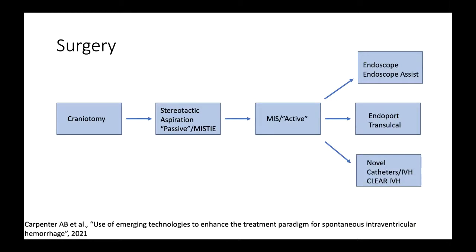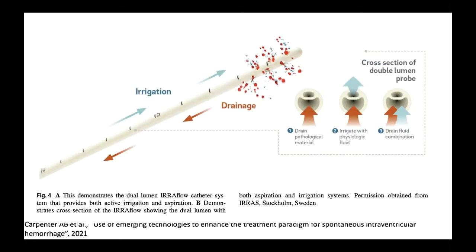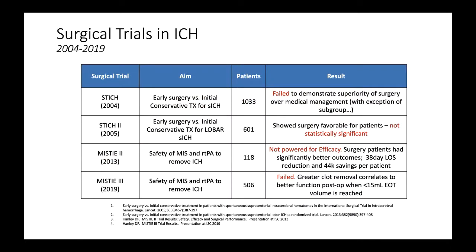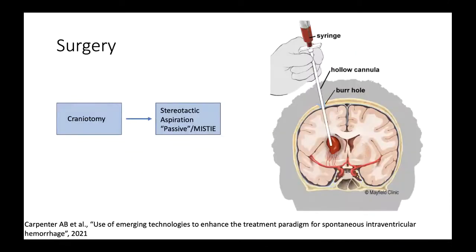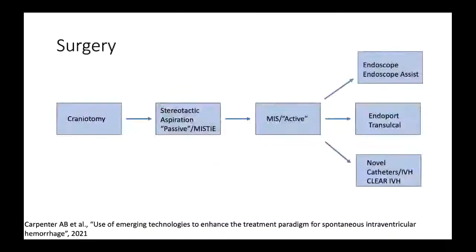There's also data on spontaneous IVH from the CLEAR IVH trial showing that treating IVH improves outcomes. Within IVH, there are also new MIS active devices like the Iriflo, a dual-lumen catheter that allows both draining bloody spinal fluid and irrigating it out. Here's a summary of clinical trials in ICH: STITCH focused mostly on craniotomy — over 70% of cases — and MISTI used stereotactic aspiration, not the newer visualized techniques.